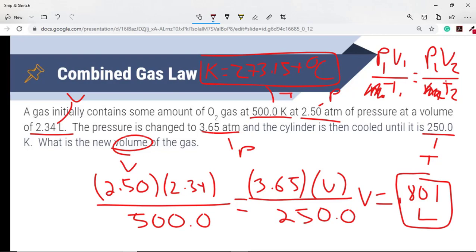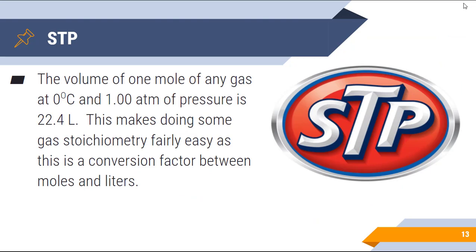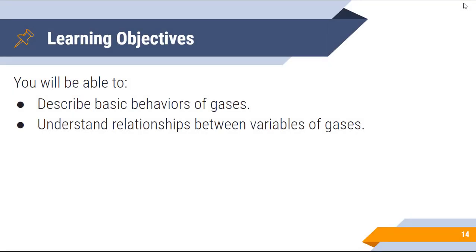The last bit that I want to make sure that you are aware of is the volume of one mole of any gas at zero degrees Celsius and 1 atm of pressure is 22.4 liters. That's the volume for any gas as long as it is one mole of something. What's nice is this makes doing some gas stoichiometry fairly easy, as this is a conversion factor between moles and liters. I don't have a practice problem for that today, but we will practice that quite a bit in class. Make sure you understand the concept of STP—standard temperature and pressure—and that one mole of any gas would be 22.4 liters.